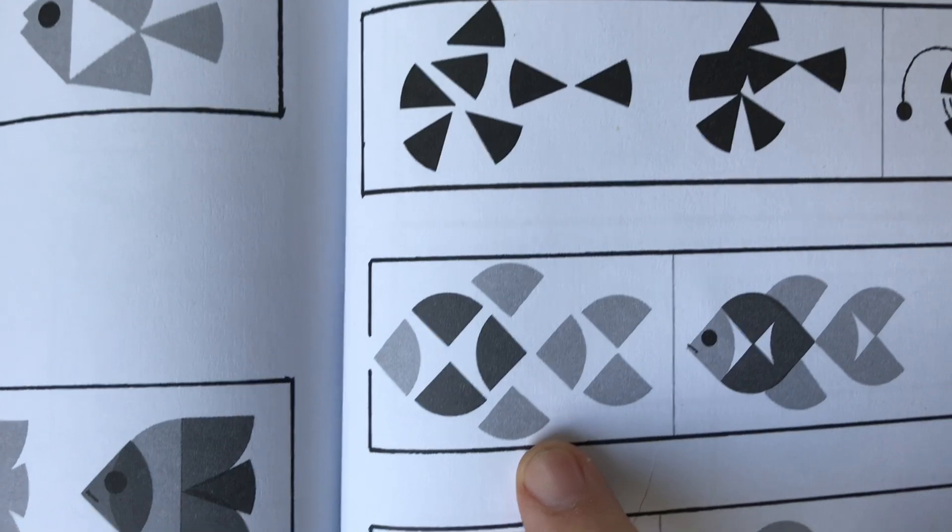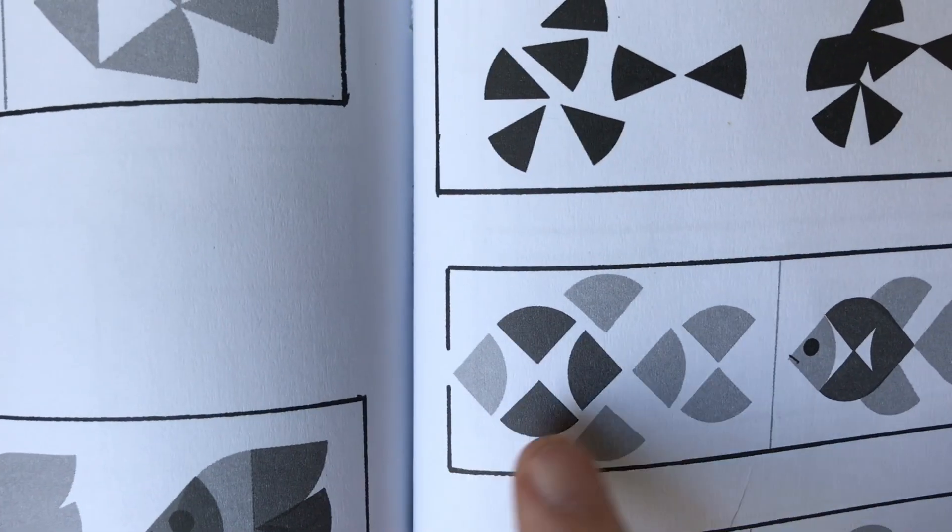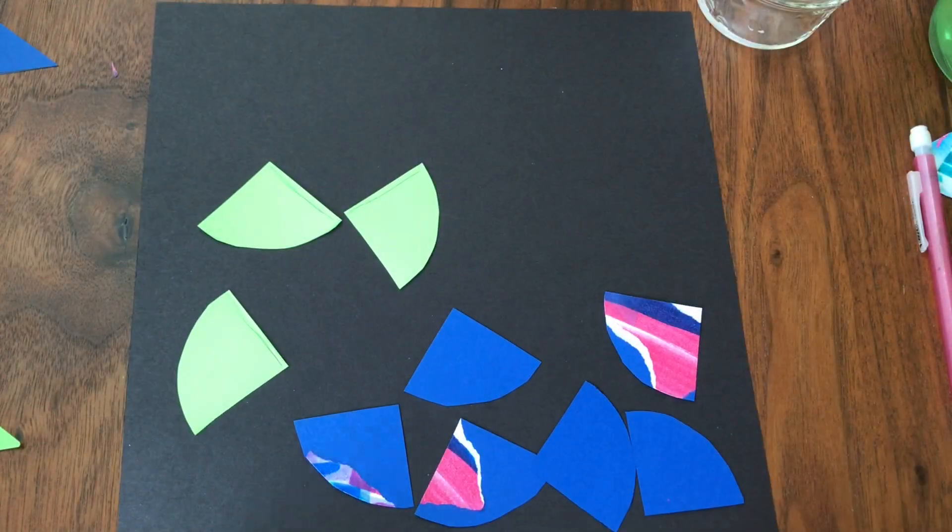I really like that fish and I can see from the picture it uses one, two, three quarter circles and one, two, three, four, five, six quarter circles of another color.